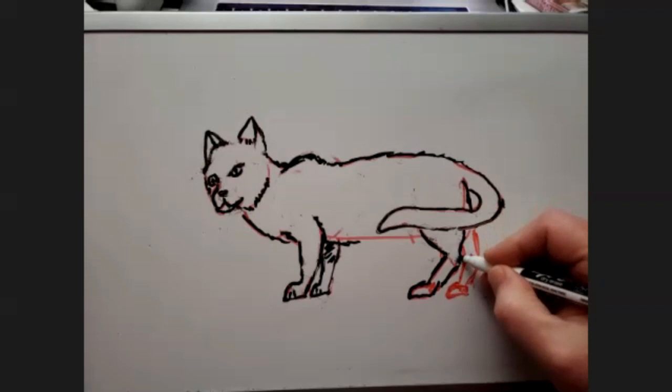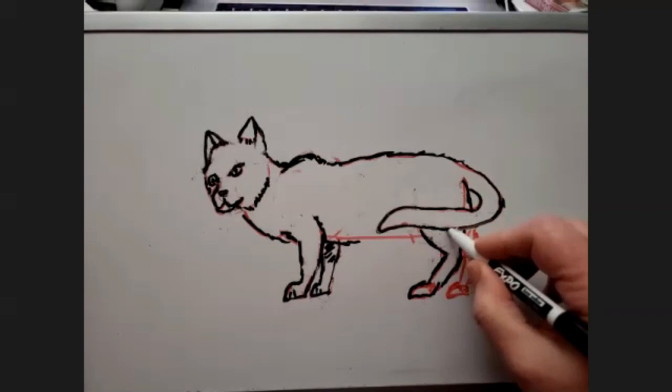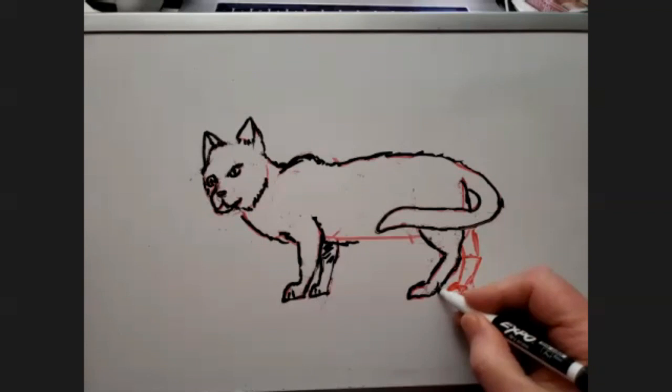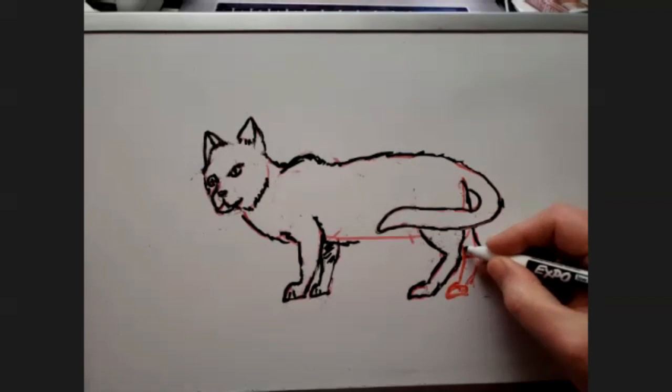Right, and we'll see this as we draw other animals too. Dogs and horses all have really long feet. Horses just walk around on their tippy toes.